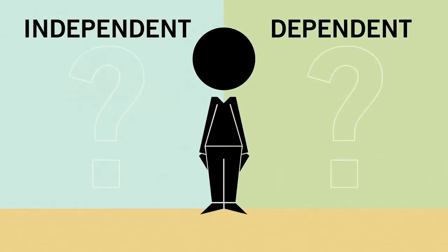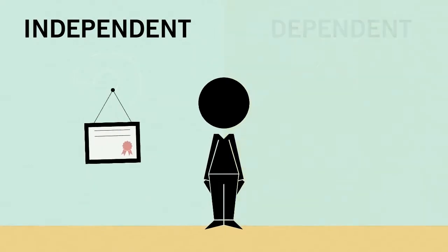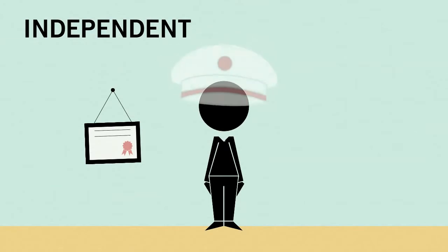So how do you figure out if you're an independent or dependent student? Generally, if you are a graduate student, on active duty in the U.S. Armed Forces, a veteran, are married, have children whom you support, or are 24 or older, then you are considered an independent student.